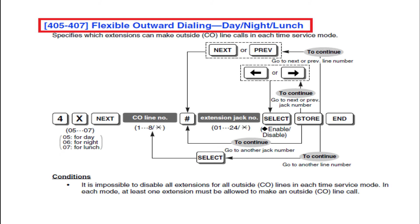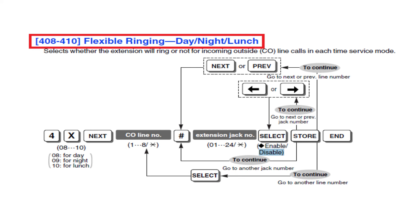Here we can restrict outgoing call for each extensions with respective of each CO lines. In this diagram you can see CO1 to CO8. We can restrict extensions number from 101 to 108 according to CO number. If you need to block outside call from extensions 102 and 103 then need to go to programming mode. After press program number 405 then select the CO in which you need to block outgoing call. After that you can select the extension jack from program and enable 02 and 03 then store it. The same you can repeat for 406 and 407 to make effective in night and lunchtime.